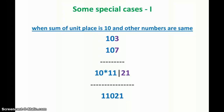Welcome back. We are going to discuss a special case where the unit place digits sum to 10 and the other digits remain the same. In our case, we have taken the numbers 103 and 107. The unit place digits 7 and 3 give us 10, and the remaining digits — 1 and 0 — are the same in both numbers.